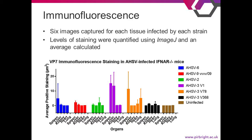This graphical summary shows the VP7 staining quantified using ImageJ to identify areas of positive staining from images captured for each tissue and strain. The spleen is generally the most infected organ across the different groups, and AHSV-3 v1 has the highest levels of staining in both its spleen and liver. V378 is also quite high. It's worth noting this isn't an ideal way to present this data — quantifying things with confocal microscopy is difficult since laser power cannot be kept entirely consistent — but I thought it better to have semi-quantifiable data with caveats than no quantifiable data at all.